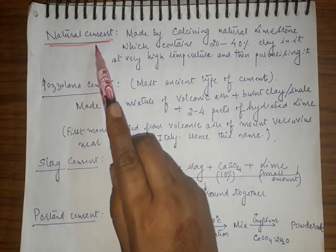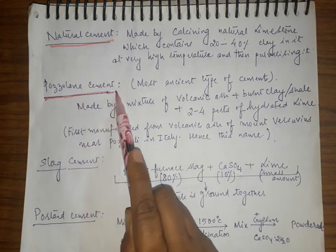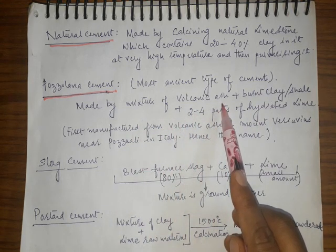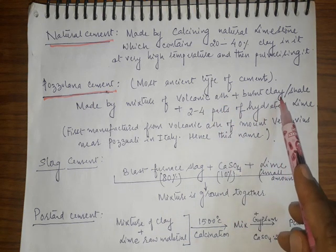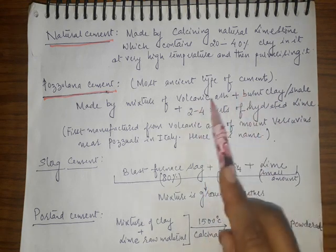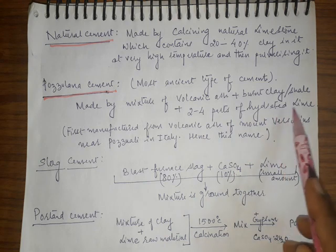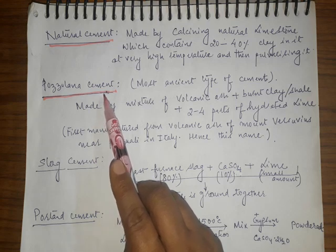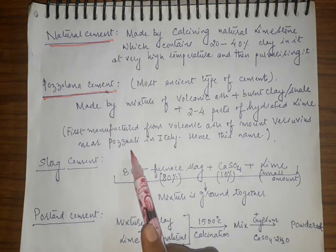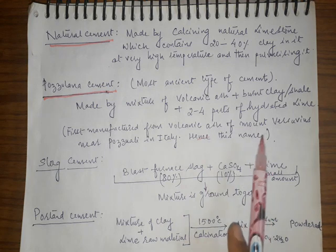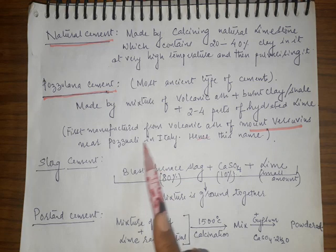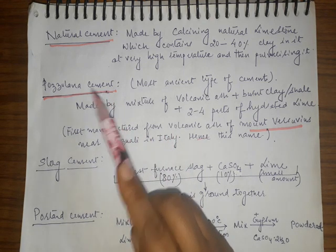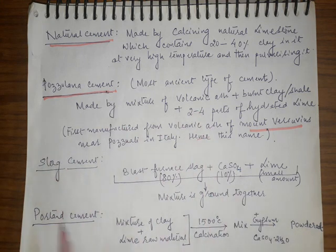Pozzolana cement is one of the most ancient types of cement. It is made by mixing volcanic ash with burnt clay or shale, and this mixture is finely mixed with two to four parts of hydrated lime. It got its name from the volcanic ash of Mount Vesuvius, obtained near a province in Italy known as Pozzolana.